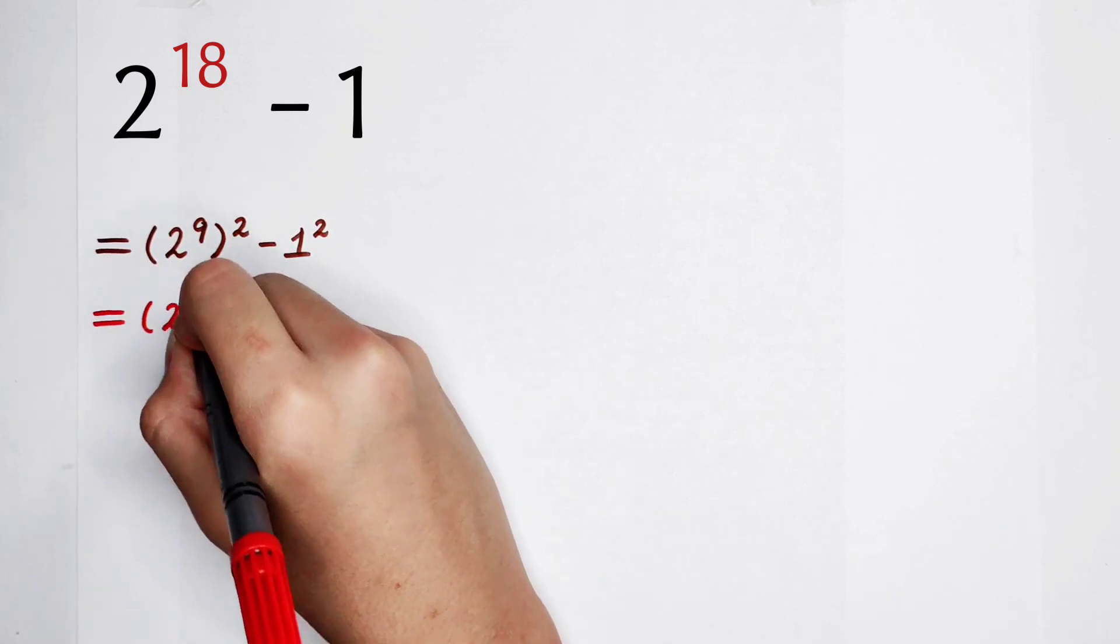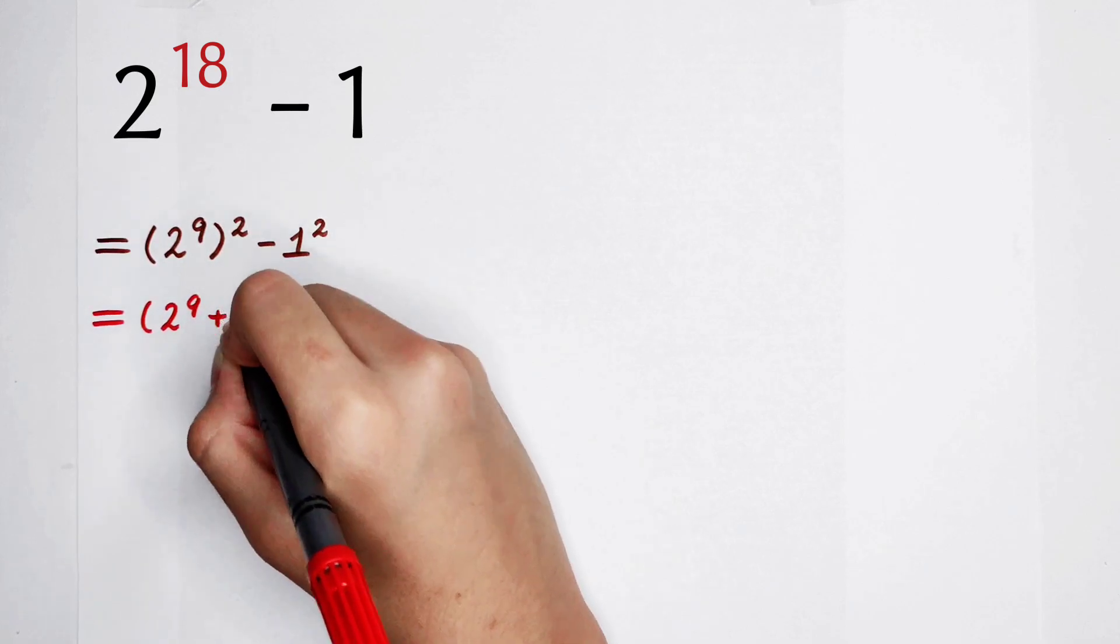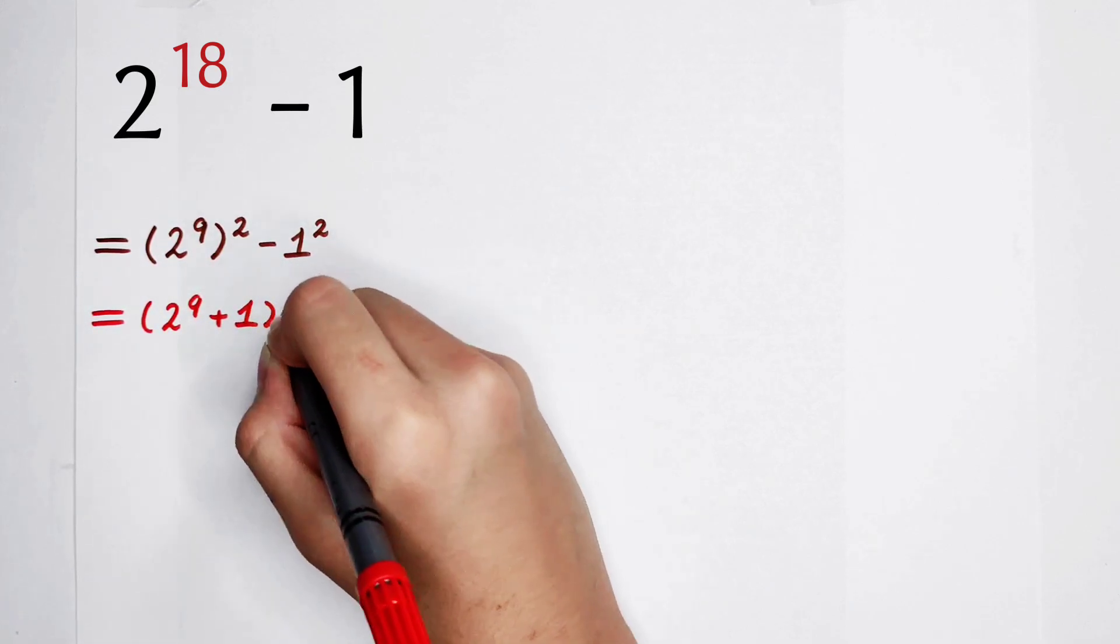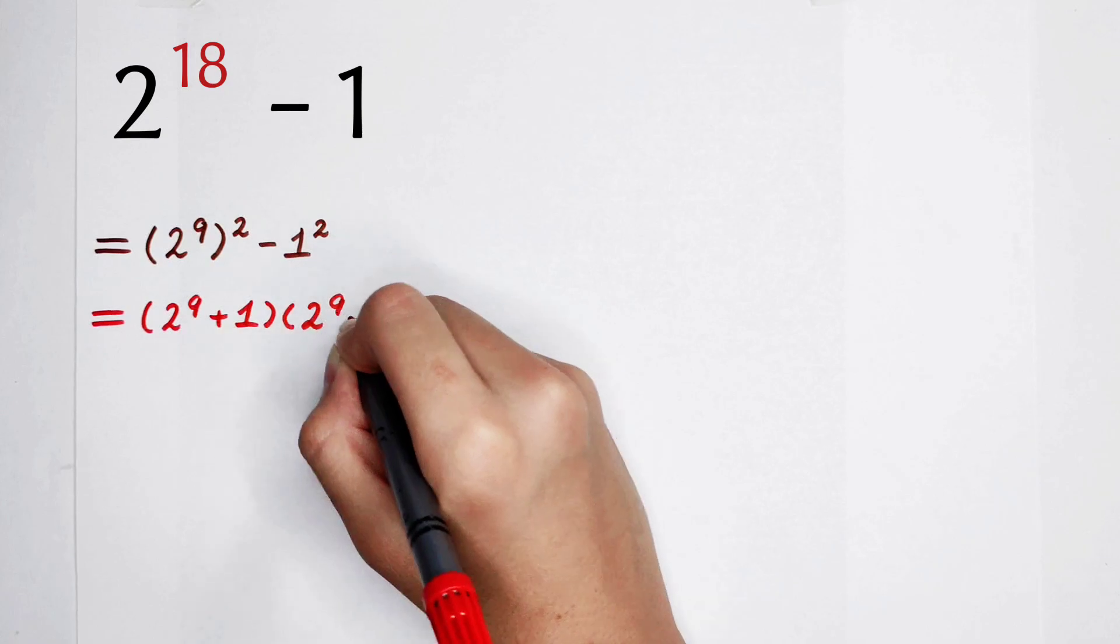Use the third binomial formula. It is 2 to the power 9, plus 1, and then times 2 to the power 9, minus 1.